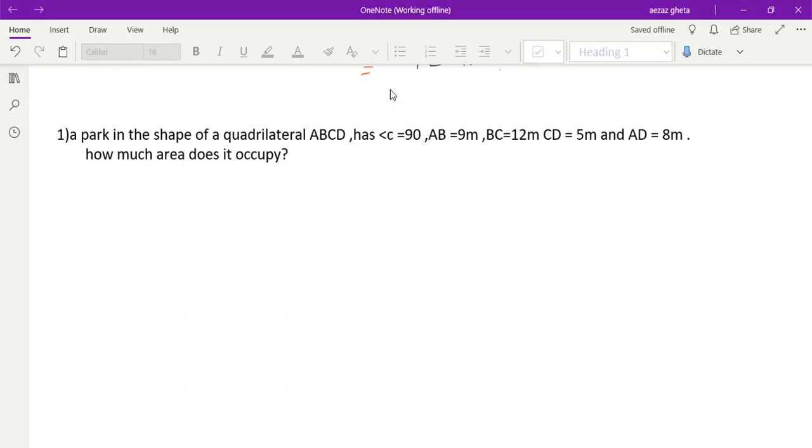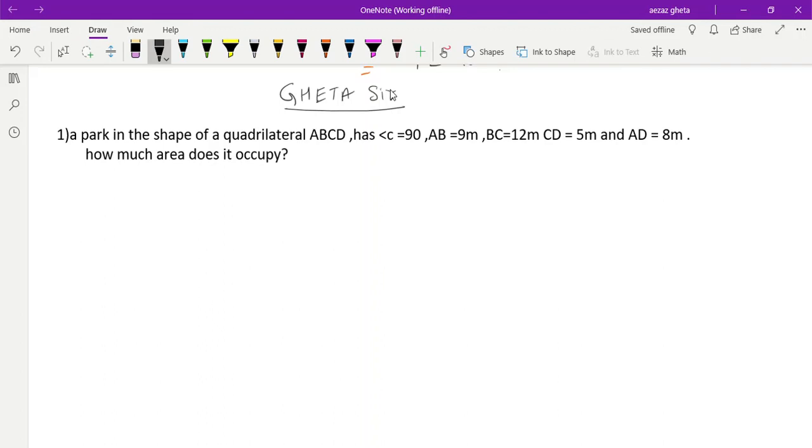Hello everybody, welcome back to my YouTube channel Azaz Geta. Here is your Geta sir. In this video we will discuss Heron's formula second exercise, first question. The question is: a park is in the shape of a quadrilateral.